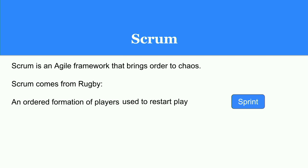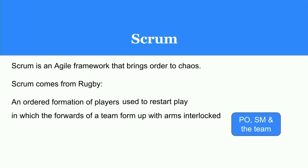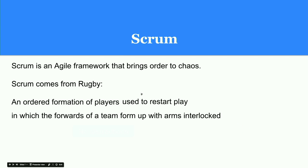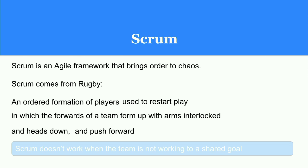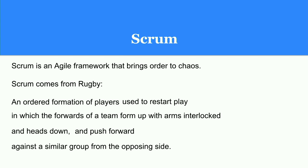The Scrum is used to restart play, which correlates to the sprints we have at each point. 'Forwards of a team form up with arms interlocked' — I see this as the Scrum team, the PO and the Scrum Master, linking arms and going forward. Heads down represents the no-distractions principle in Scrum. Scrum doesn't work unless the whole team is on board and focused on going forward in the same direction.